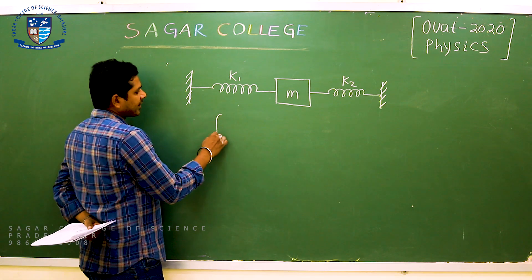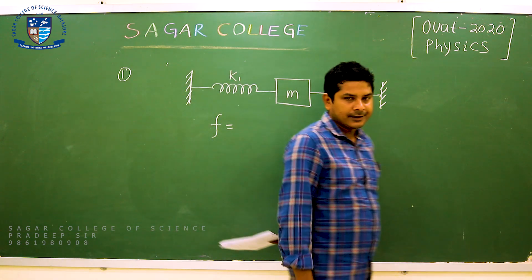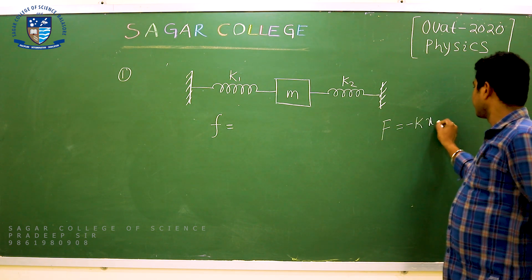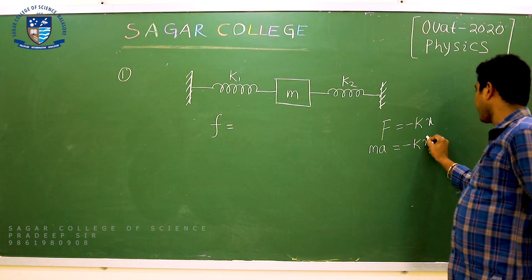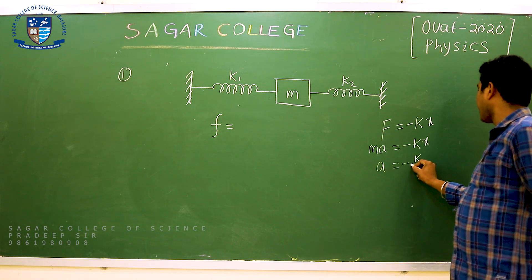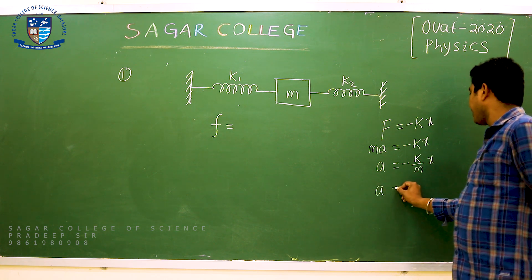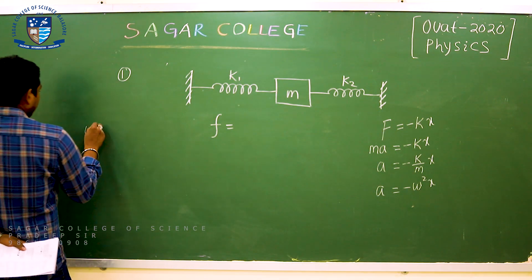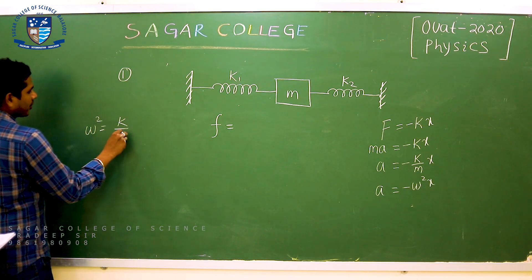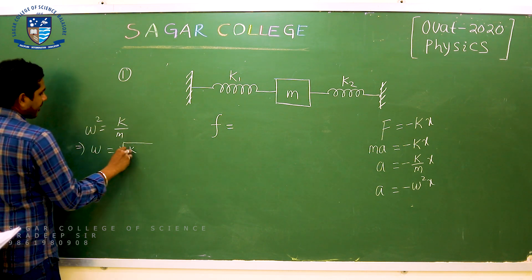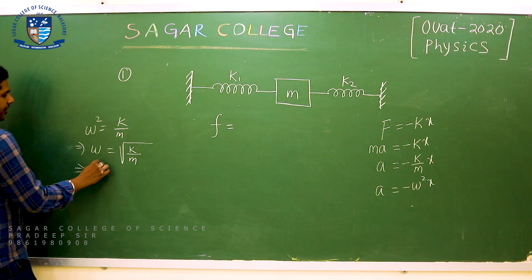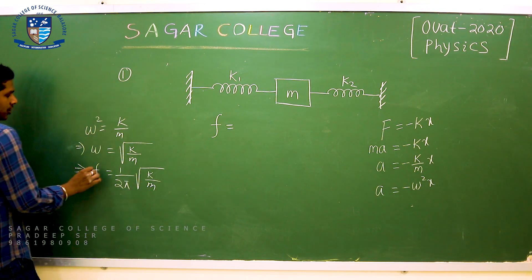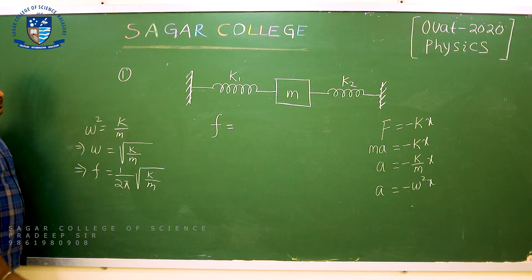This is the frequency formula. From the spring pendulum, F is equal to minus K into X. So MA equals minus K into X. Acceleration is equal to minus K by M into X. So omega square is equal to K by M. That implies omega is equal to square root of K by M.